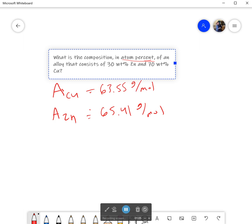Now I want to find the composition in atom percent. So my equation in this case—and I'm not going to do a derivation because it's in the book—but the equation in this case would be the composition percent of zinc.